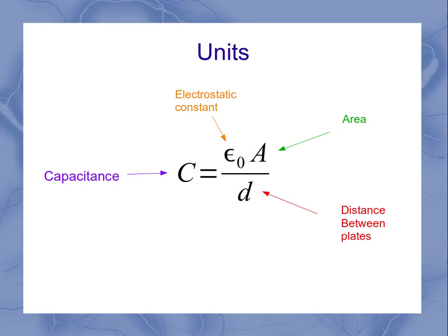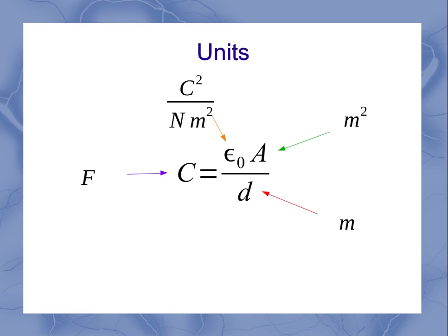So now we can come back and take a look at the units. We've already seen capacitance has an assigned unit of a farad. The electrostatic constant is coulomb squared per newton meter squared. Area, well that you should know, is meter squared. And the distance between the plates is going to be something like meters.